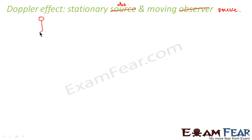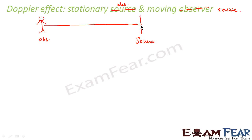Let us suppose here is the stationary observer and here is the source — it can be any vehicle, a horn, a music system, anything. Let us suppose the source is located at a distance l from the observer. The object will remain at this position but the source will keep changing its position, and we will see how the frequency is getting changed.